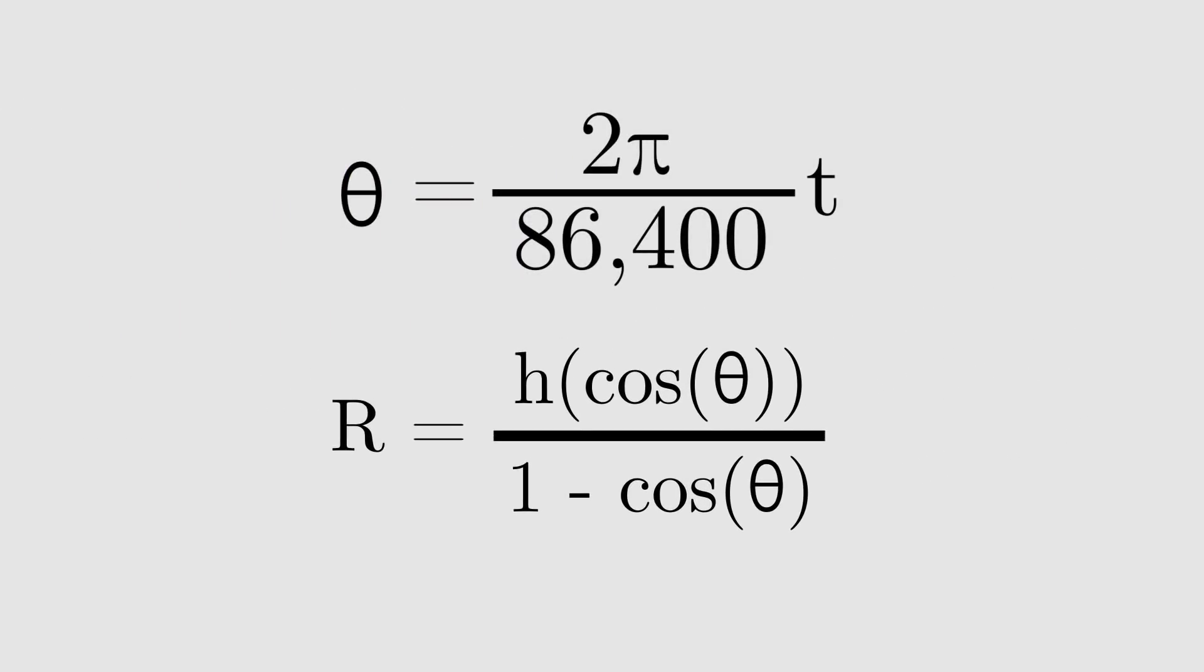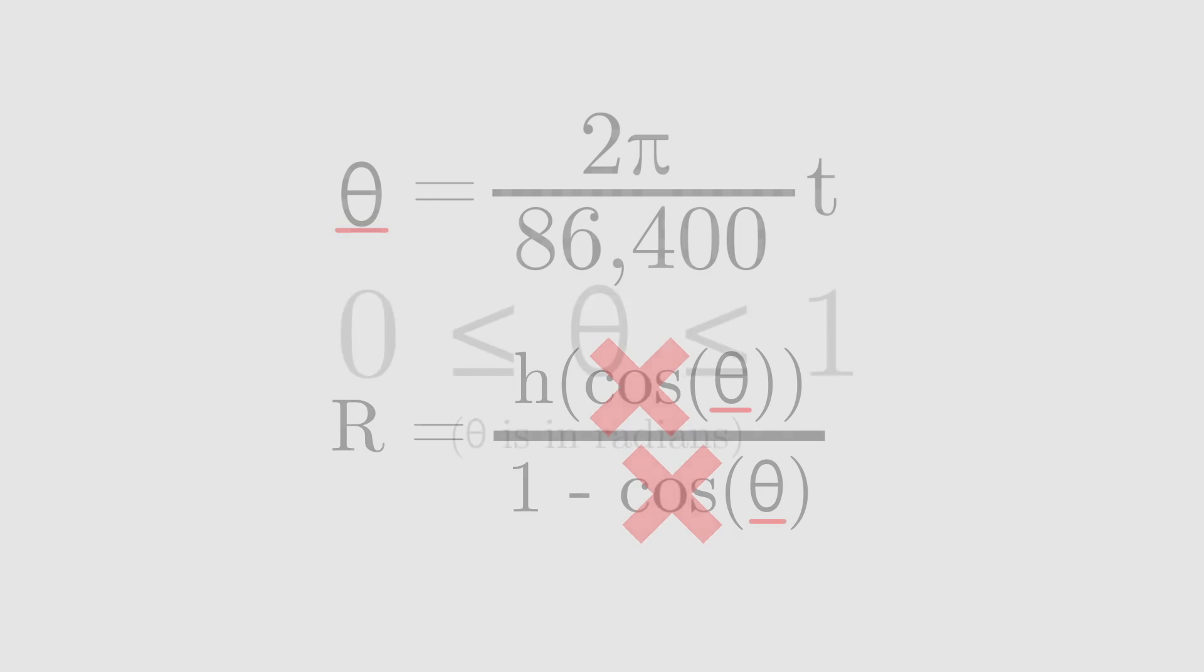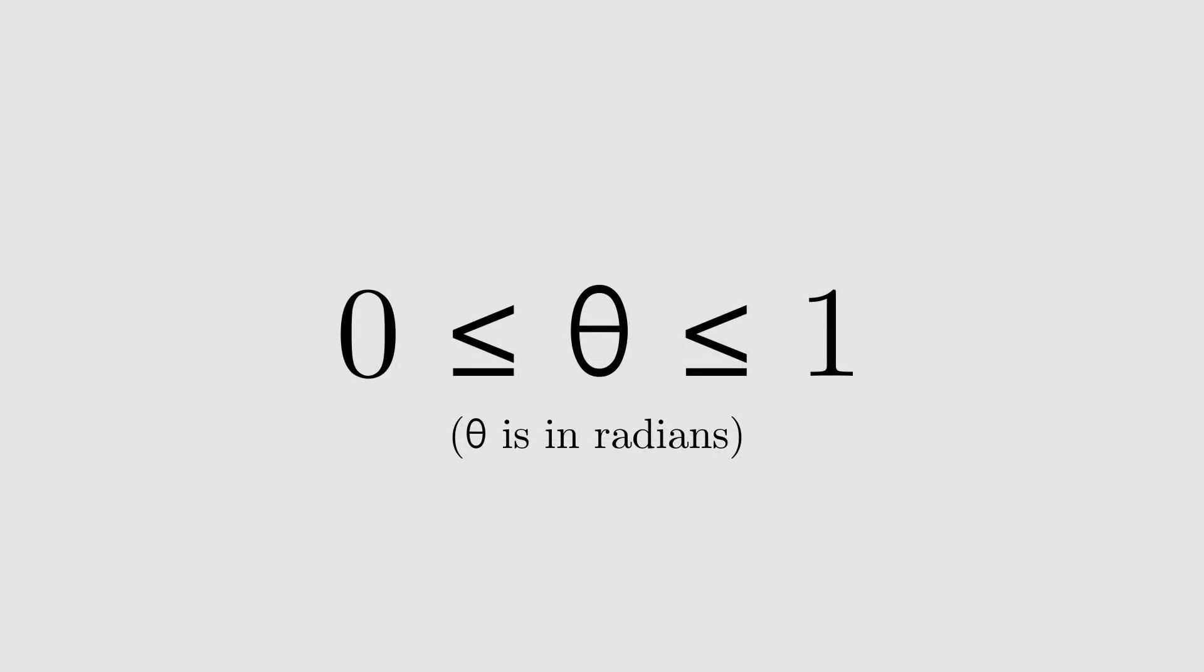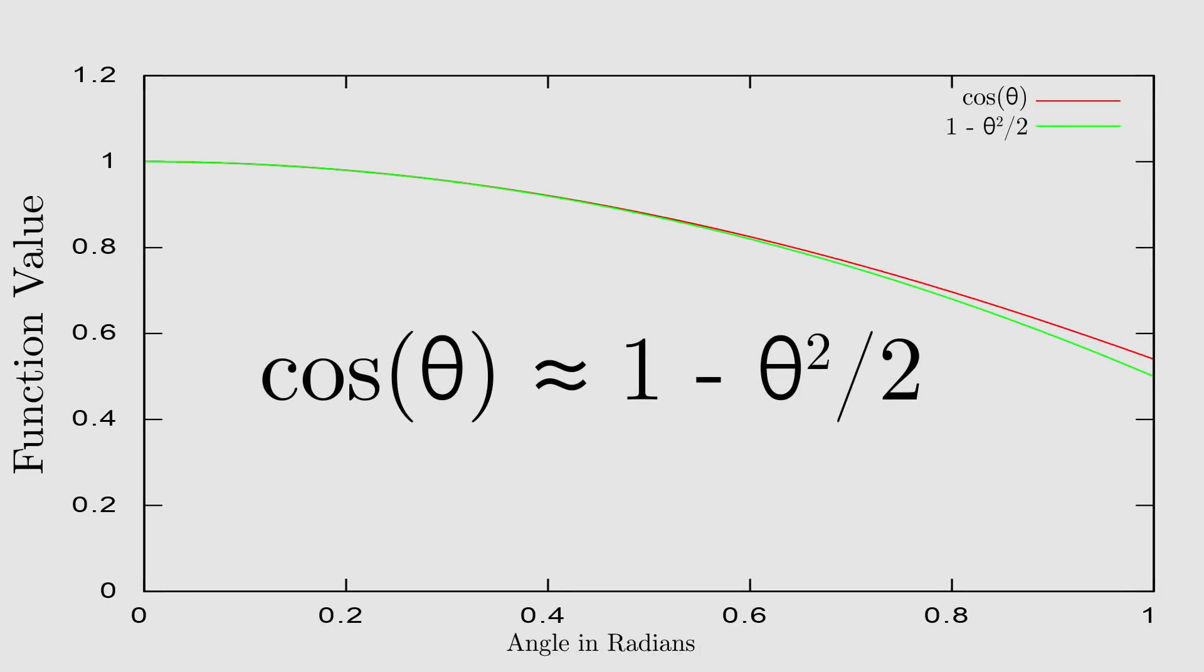We could insert our value of theta directly into this formula, but let's approximate the terms so that we can avoid trig functions. For small angles, always in radians, cosine of theta is approximately 1 minus theta squared over 2.